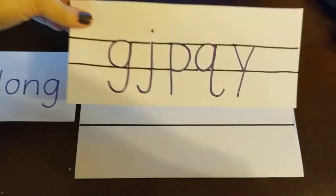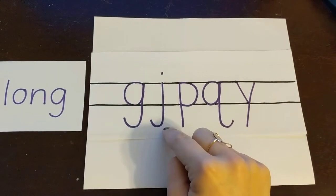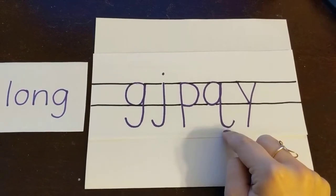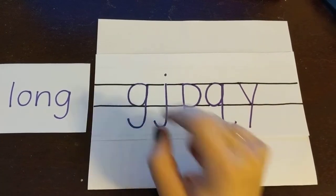Examples of long letters are G, J, P, Q, and Y. See how they come down below the line?